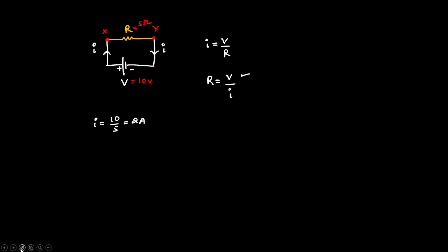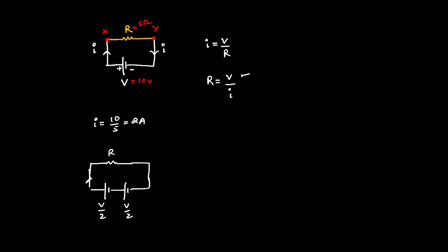Now, suppose we consider the equivalent circuit and divide it into two parts. There is a resistor R, and the cell is divided into two parts — V/2 and V/2. If this is 5 ohms with 5 volts and 5 volts, current is still 2 amps, as you can verify with KVL. Even if we ground one point to zero voltage, the current remains 2 amps, because current depends only on potential difference, not on potential itself.